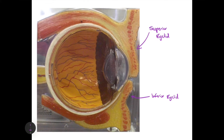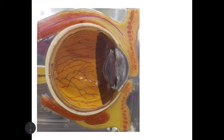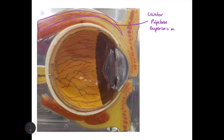There's a muscle that helps move the superior eyelid. Looking at the superior portion of the image, you can see this muscle belly coming up and inserting into the superior eyelid. This muscle is called the levator palpebrae superioris muscle. When contracted, it lifts up the superior eyelid.